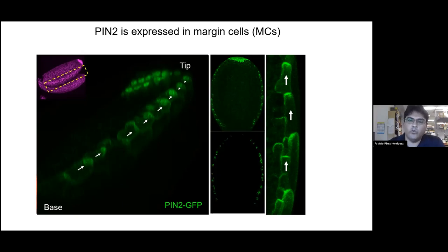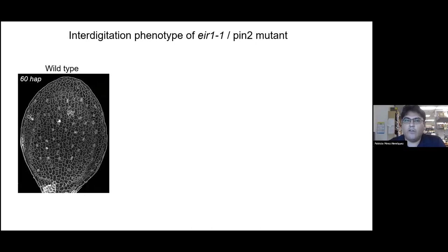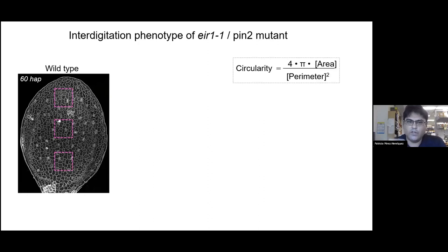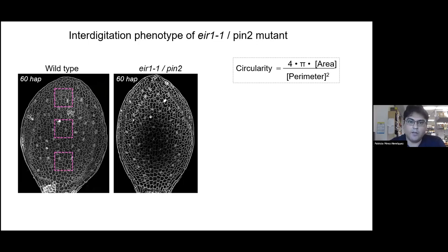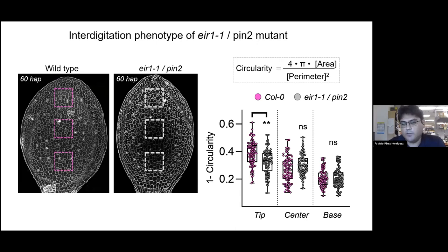The signal you see at the tip is autofluorescence that we remove with spectral imaging, to identify the phenotype in interdigitation of this mutant. We identified different zones of the cotyledon along the proximal-distal axis and used a shape descriptor — a ratio between area and perimeter — in the wild type and in the pin2 mutant, to discover that specifically at the tip there is a lower level of interdigitation, consistent with a lower level of auxin in that area.